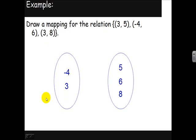And now we have to do the map. -4 maps to 6 for the point (-4,6). 3 maps to 5 and to 8 for the points (3,5) and (3,8). That's a mapping diagram. I guess if you wanted to be a little more specific you could put a D or a domain up here and an R or a range here.